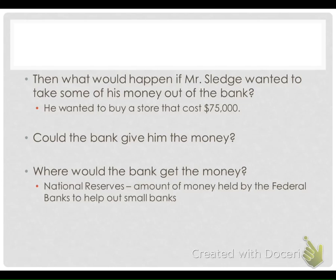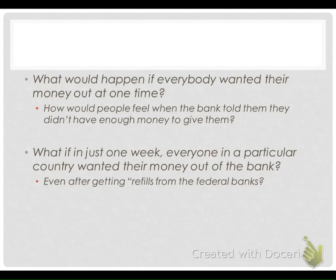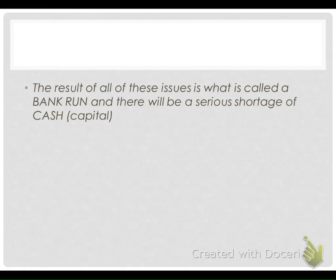The bank gets the money from the National Reserves — this is where the government holds money as well. But what if everybody in the entire banking system, in the entire nation, all wanted to get their money at one time? How would people feel when the bank told them they didn't have enough money? If everybody tries to pull it out at once, they're not going to be able to do that. Even after getting all the refills from reserves, they're still going to run out. This situation is called a bank run — a very big shortage of capital inside a country. The country is going to be bankrupt, people are going to struggle, and you're going to see a lot of overthrows of the government.